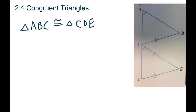Today's lesson is on congruent triangles. Congruent means they're exactly the same size, exactly the same shape — all the different sides are the same, all the angles are the same, everything's exactly the same.